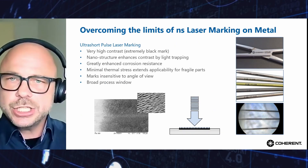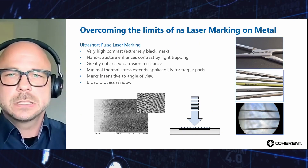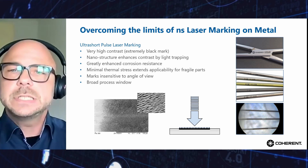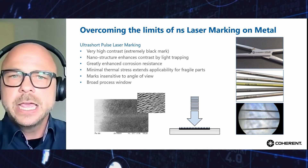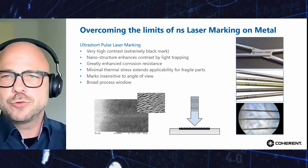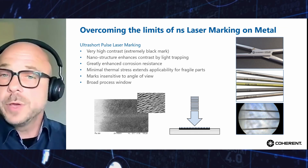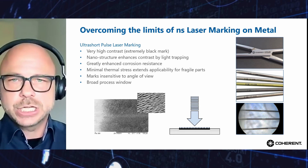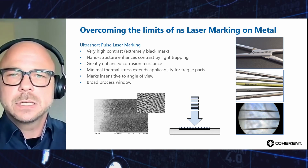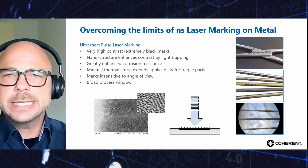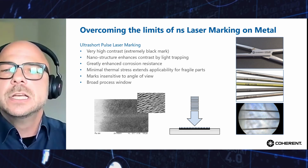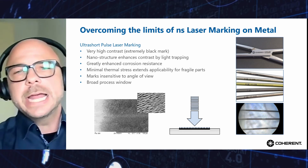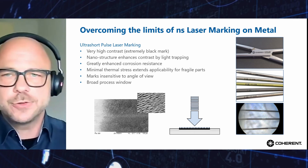We overcome all these limits by utilizing ultra-short pulse lasers. Picosecond lasers leave on stainless steel a very high contrast, extremely black mark. How is this mark created? It is a kind of nanostructure created at the surface — the so-called LIPSS: laser-induced periodical surface structures. This nanostructure enhances the contrast by light trapping.